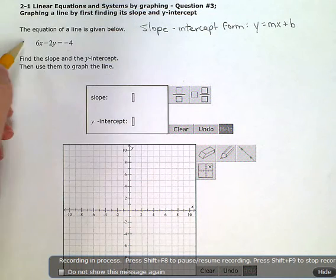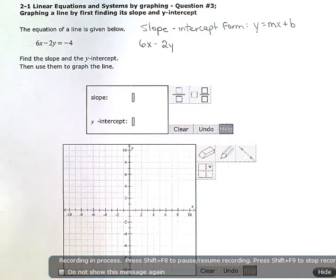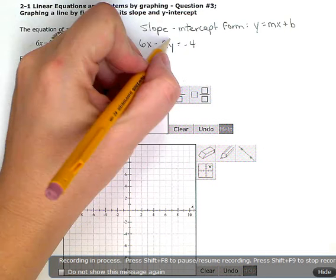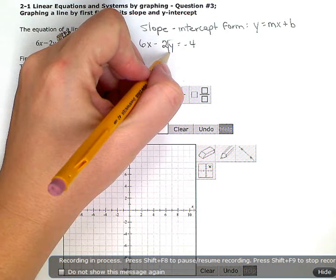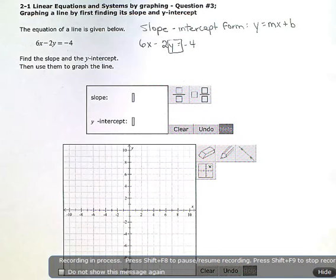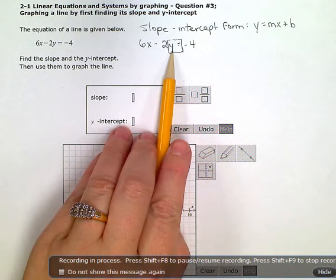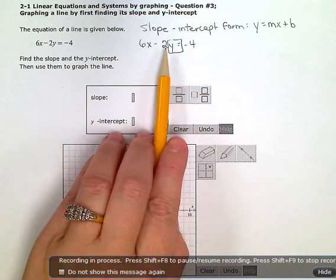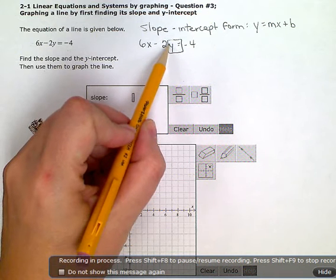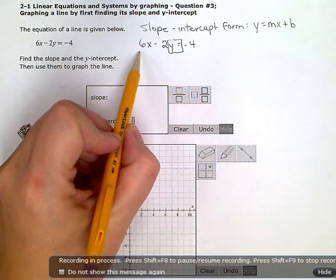So I'm going to write it down over here. 6x minus 2y equals negative 4. Now I want to get the y all by itself. I want it in y equals form. So I want the y and the equals, with the y all by itself on the left side over here. So I know this is going to take two steps of algebra because I need to get rid of this negative 2 that's attached directly to the y, and then also this 6x out front here.